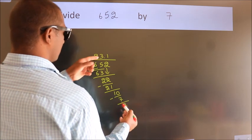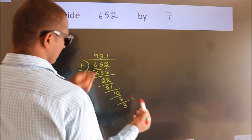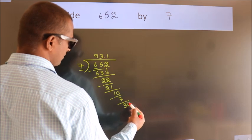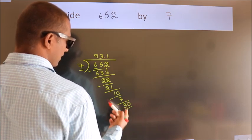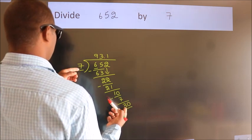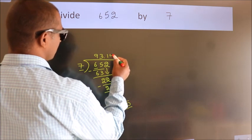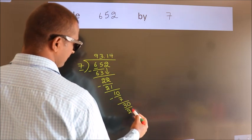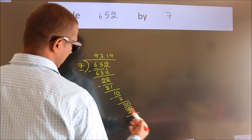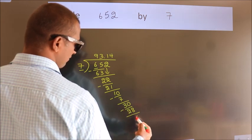After this, we already have the decimal, so directly take 0. So, 30. A number close to 30 in the 7 table is 7 fours, 28. Now we subtract. We get 2.